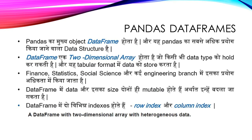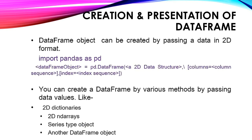Now we shall move to the next topic: data frame. A data frame is also a type of data structure used to store data. Here the data is stored in a two-dimensional array, also called a 2D array. Data is stored in tabular format, that is rows and columns, with two axes: x-axis and y-axis. Data frames are mutable, meaning both data and size can be changed — unlike series where only data is mutable. Data frames are also heterogeneous, meaning a mixture of different data types can be stored.